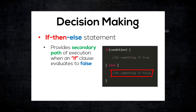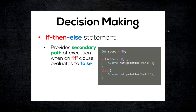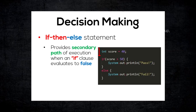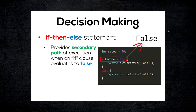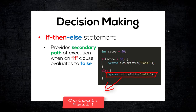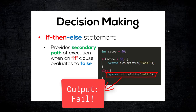Let's take a look at this example, assuming the score variable is now having the value of 40. And since 40 is not more than 50, this condition will be evaluated as false, and the statements within the else clause will be executed instead.